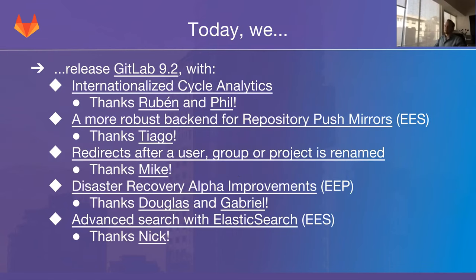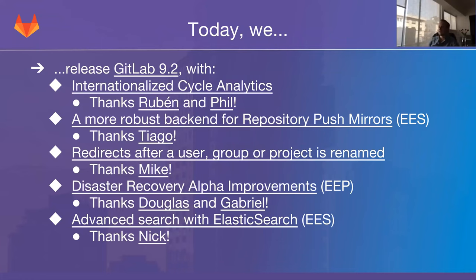So today, on this 22nd of May, as every 22nd of the month, we are releasing a new version of GitLab. One of the major things the platform backend team worked on is internationalized cycle analytics. The cycle analytics page is now set up to support different languages — to start, Spanish and German. This sets up the groundwork for more pages being translated, worked on primarily by Ruben and Phil.